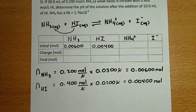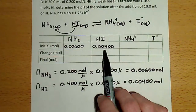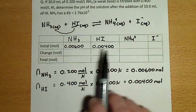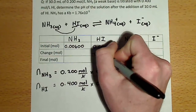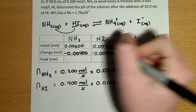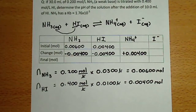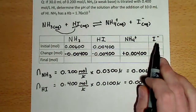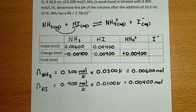Now that I know the initial molar amounts of my reactants, and I can see that they react in a 1 to 1 ratio, I can determine that hydroiodic acid is my limiting reactant — I have less hydroiodic acid in moles than I do ammonia. So I can represent my change by the loss of all of the hydroiodic acid. I could also determine the number of moles of iodide ion created; however, iodide ion, as the conjugate base of a strong acid, does not have an effect on pH, so I'll fill in that column with dashes.